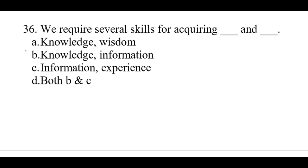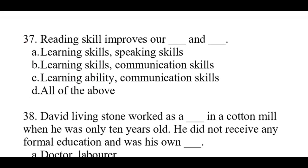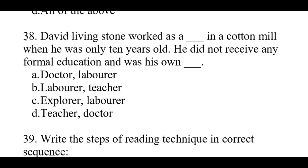Question number 36: We require several skills for acquiring knowledge and wisdom. The right option is A: Knowledge and Wisdom. Question number 37: Reading skill improves our learning ability and communication skills. The right option is C: Learning ability and communication skills. Question number 38: David Livingstone worked as a laborer in a cotton mill when he was only 10 years old. He did not receive any formal education and was his own teacher. The right option is B: Laborer, teacher.